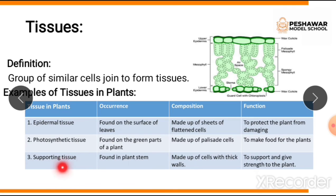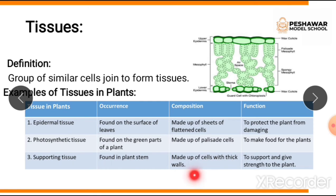Supporting tissue, as the name suggests, provides support. It is found in the plant stem and is made up of cells with thick walls, because they are supporting the plant. The function of supporting tissue is to support and give strength to the plant, allowing it to stand erect. Taller trees stand straight because of their supporting tissue.